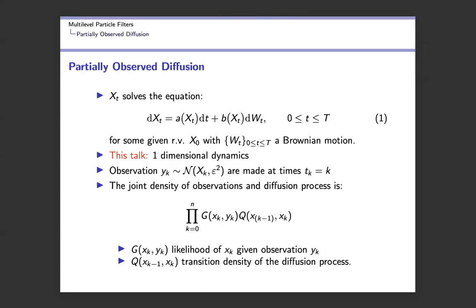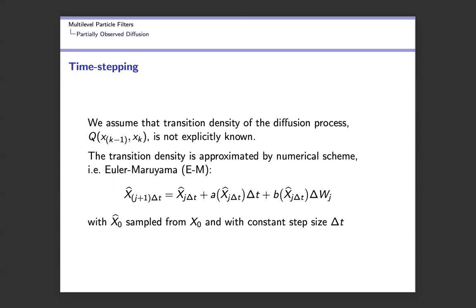The mathematical model is partially observed diffusion, where we have a stochastic differential equation. We restrain ourselves to one-dimensional dynamics. We have noisy observations over these underlying dynamics, equally spaced in time. The joint density of the observation and diffusion process is a product of the likelihood and the transition density Q. In real applications, the transition density is never known explicitly, so we need to approximate it by some numerical scheme — for example, Euler-Maruyama, which is the first-order numerical scheme widely applied to approximate stochastic differential equations.